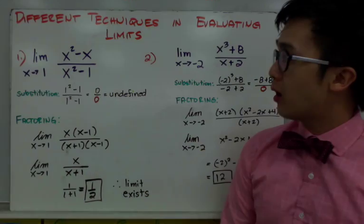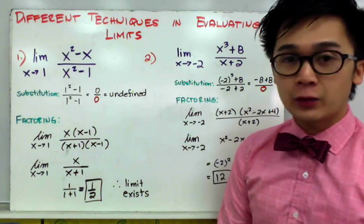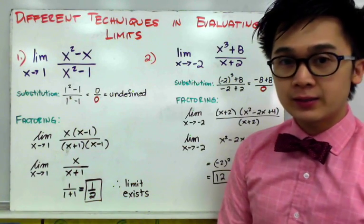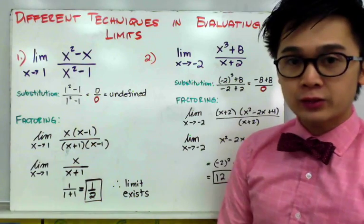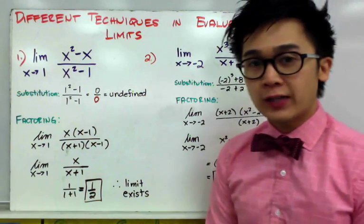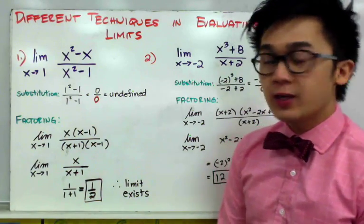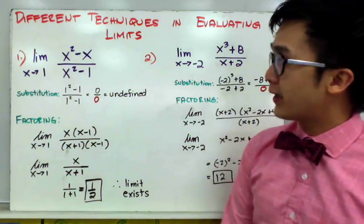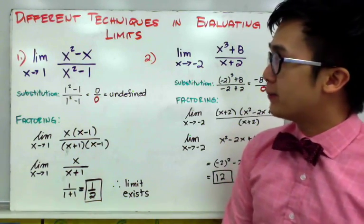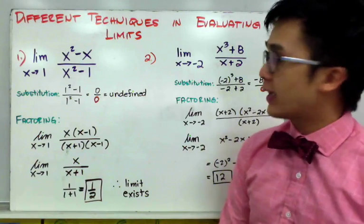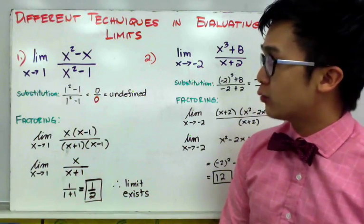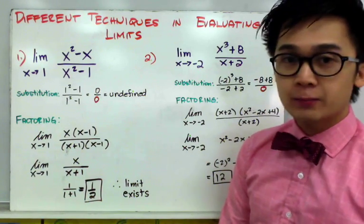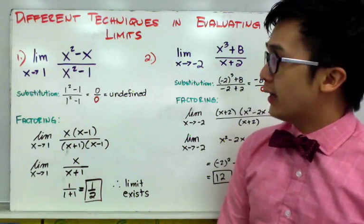We are going to continue evaluating limits, and this time all the examples I'm going to show you are all rational functions. The first example is the limit of x squared minus x, all over x squared minus 1, as x approaches 1.